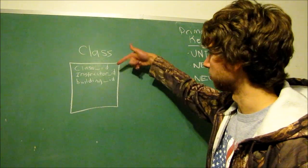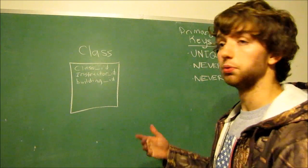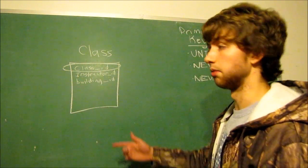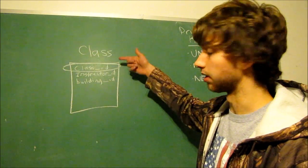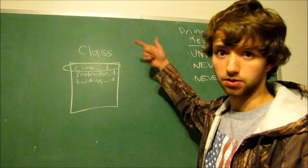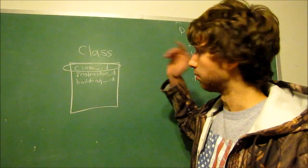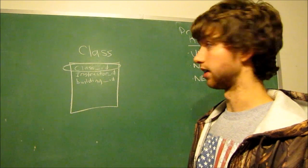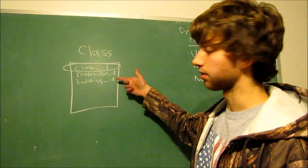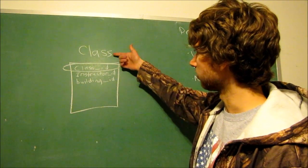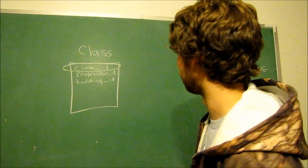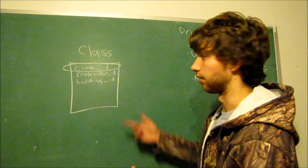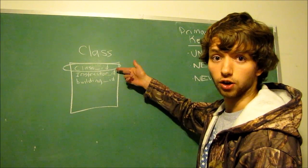Here are three IDs. You can assume they're all keys of some sort. Which one is the primary key? The class ID — this is the primary key because it's the class table. Every single row is going to have a class ID. But we also have an instructor ID and a building ID. Since these are unrelated to the class itself, you can assume they're foreign keys, because the instructor ID belongs to an instructor, not the class.